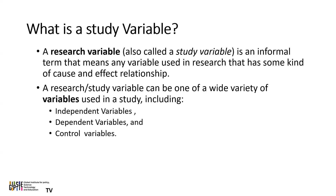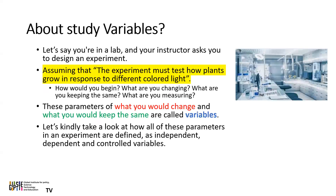Now let's look at several details about research variables. Let's say you are in the lab, and your instructor asks you to design an experiment — assuming the experiment must test how plants grow in response to different colored lights. How will you begin? What are you going to change? What are you keeping the same? And what are you measuring? These questions help you have a broader picture about the various forms of variables — independent, dependent, and control variables.